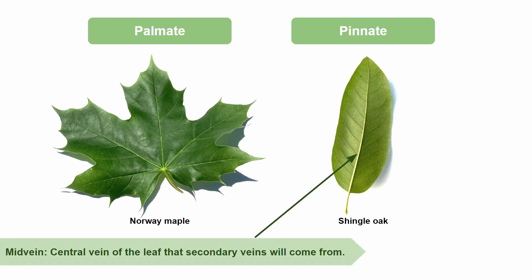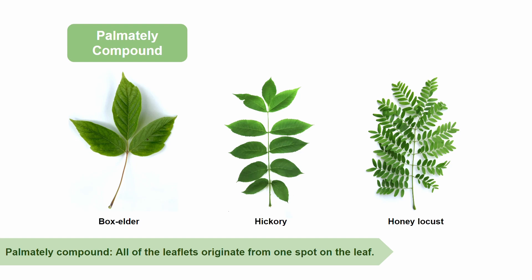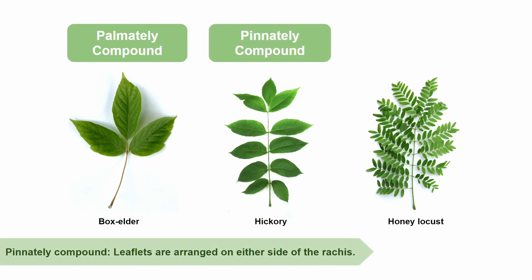The mid-vein is a central vein of the leaf that the secondary veins will come from. Like simple leaves, compound leaves can also be palmate or pinnate. Instead of being connected, the leaflets make up the hand or feather shape. Acer negundo, otherwise known as boxelder, is a fairly common species that is palmately compound, which means all of the leaflets originate from one spot on the leaf. If we imagine this leaf as a hand, it would only have three fingers because there are only three leaflets. On the other hand, black walnut is an example of a pinnately compound leaf, where leaflets are arranged on either side of the rachis.